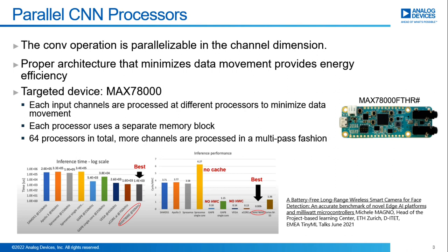Let me start with some facts. As we all know, the convolutional operation is parallelizable in the channel dimension, and less data movement in the hardware means more energy efficiency. We combined these two facts while creating our Analog Devices CNN Inference Engine, MAX78000. Its energy and latency efficiency have been evaluated independently by Professor Michele Magno from ETH Zurich.